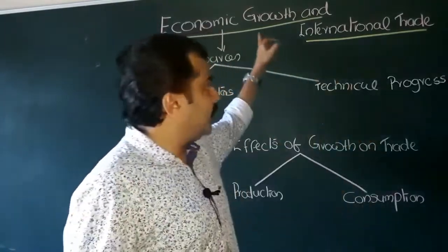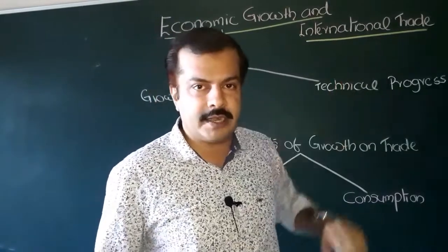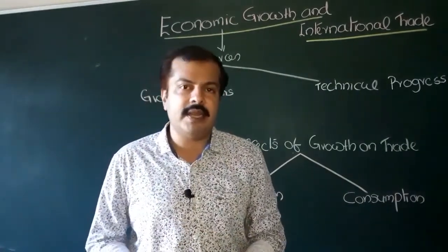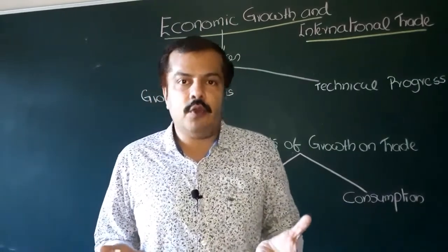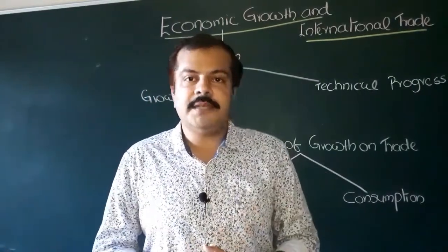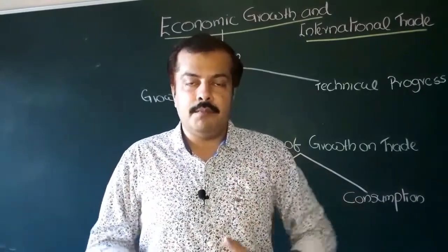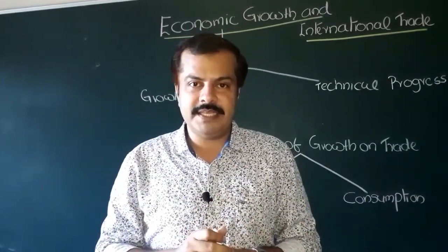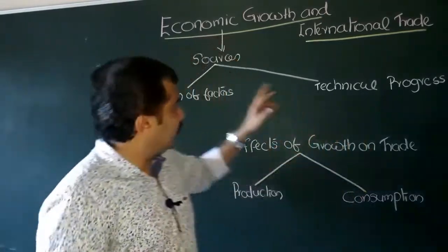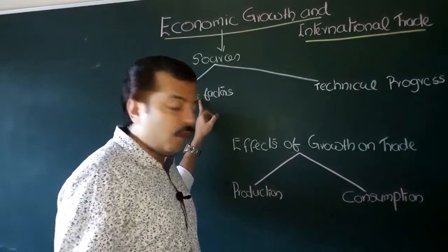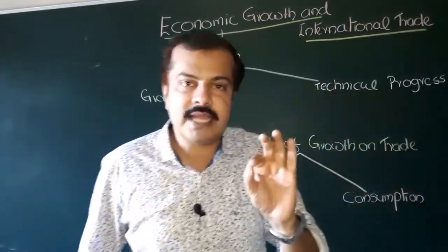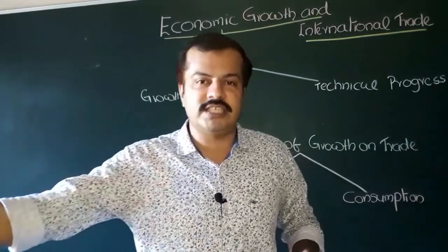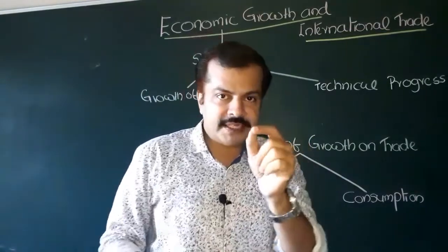When we talk about growth of factors, we are talking about two factors: capital and labor. When there is an increase in the endowment or availability of factors of production, that means more production will be possible, more output will be possible. There will be a rightward shift in the production possibility curve. That is economic growth as a result of increase in the endowment of factors of production, or even as a result of technical progress.